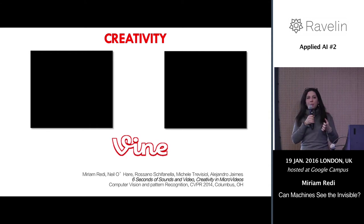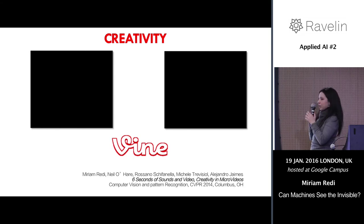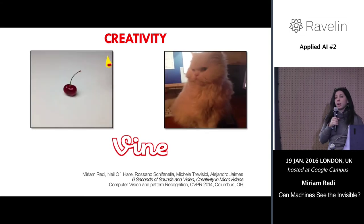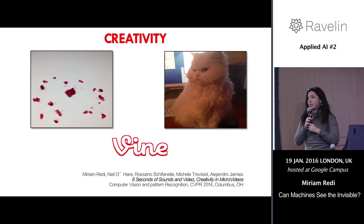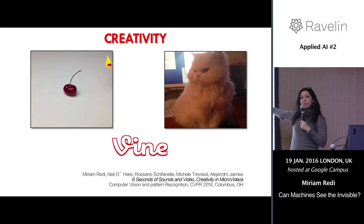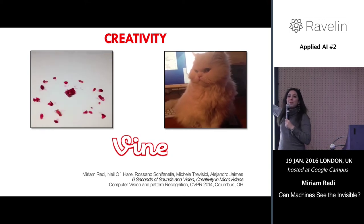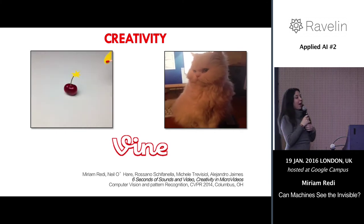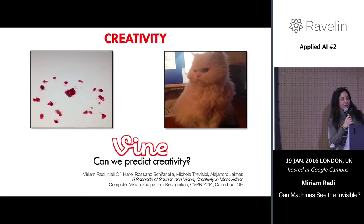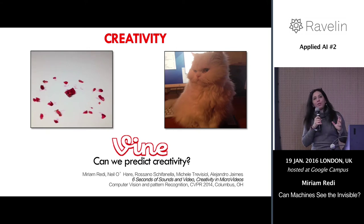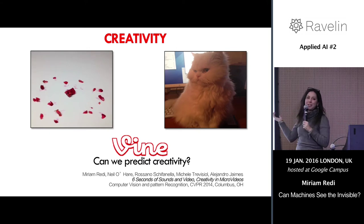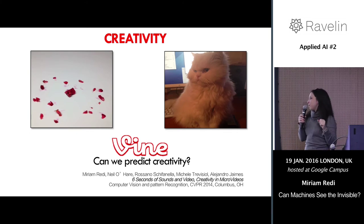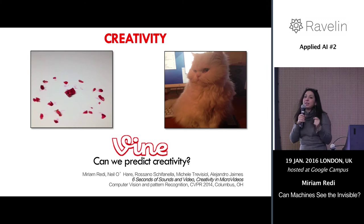However, not all Vine videos are actually creative. About 99% of the videos actually look very ordinary rather than creative. With the aim of spotting the creative videos in the Vine platform, we decided to build a machine learning framework — a subjective machine vision framework — that can automatically assess the creative degree of Vine videos.